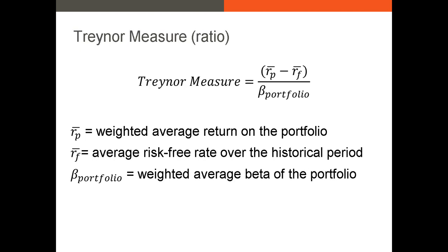The Treynor measure is the weighted average portfolio return minus our risk-free rate over the period, all divided by the weighted average portfolio beta. The beta is our portfolio's measure of market risk — it's the same beta that you used in the CAPM. Just like the Sharpe index, we use historical data in this calculation when comparing the performance of our portfolio with that of other portfolios.